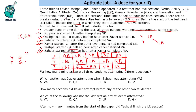Question: For how many minutes were all three students attempting different sections? For the first 30 minutes, two are the same. In the next slot, two are also the same. The third slot — all three are in different sections. Then same again, then all three different. So the answer is 60 minutes.